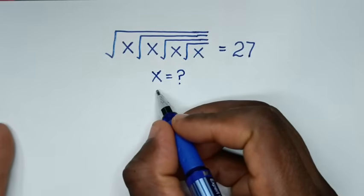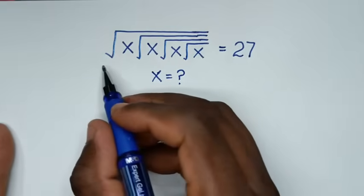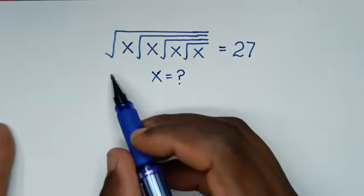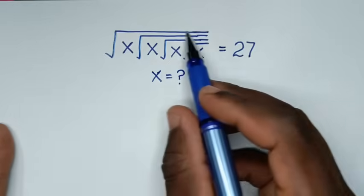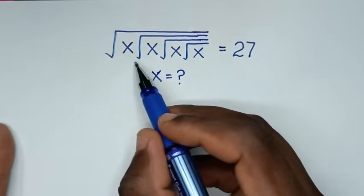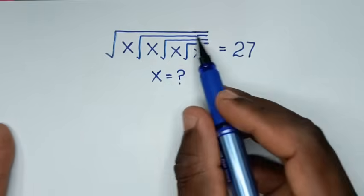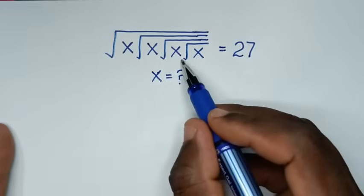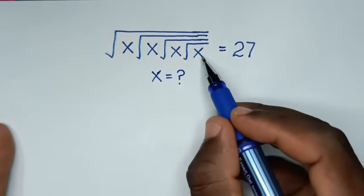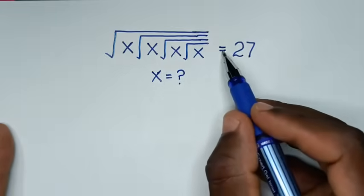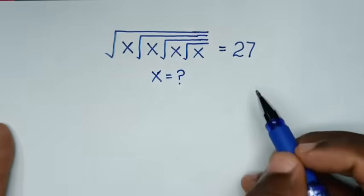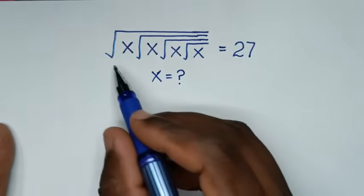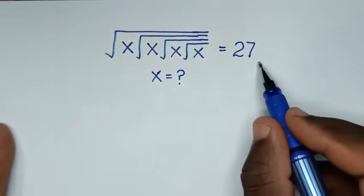Hello, you are welcome to solve this math problem, which is the square root of x under square root of x under square root of x under square root of x, is equal to 27. To find the value of x from this equation.